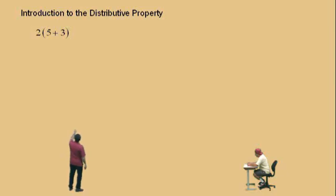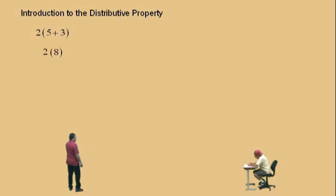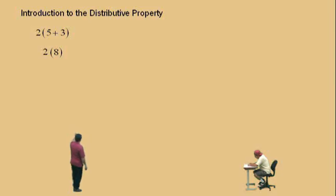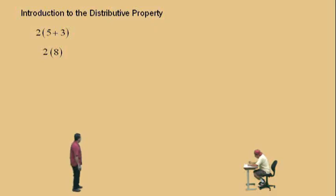Watch. We take what's in the parenthesis — 5 plus 3. What's 5 plus 3, Charlie? 8. Don't forget we have a 2. Now, what's the operation? There's a 2 outside of a parenthesis with no operation written down, so it's assumed to be multiplication. So 2 times 8 is 16 — the same as 8 times 2.